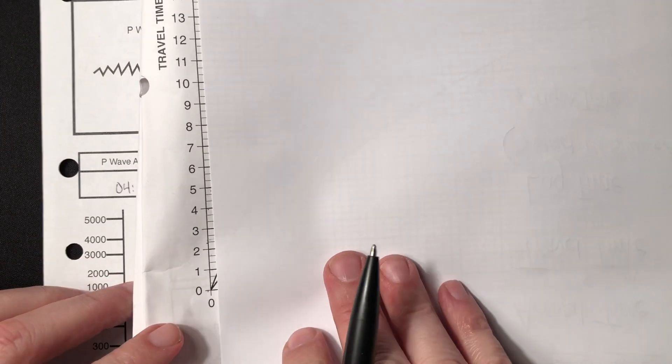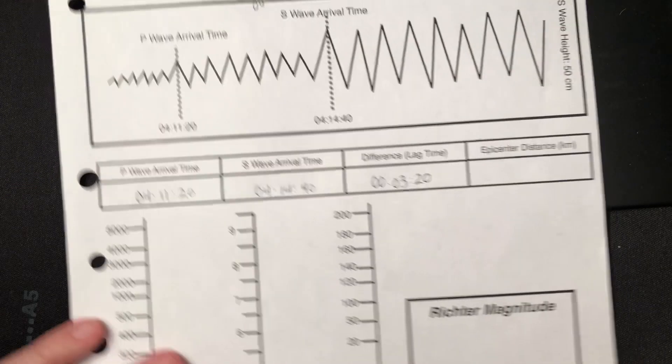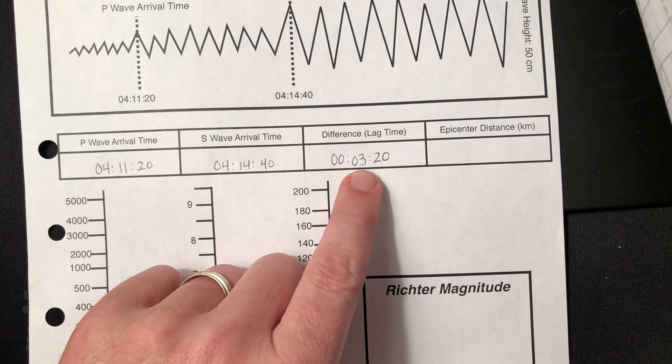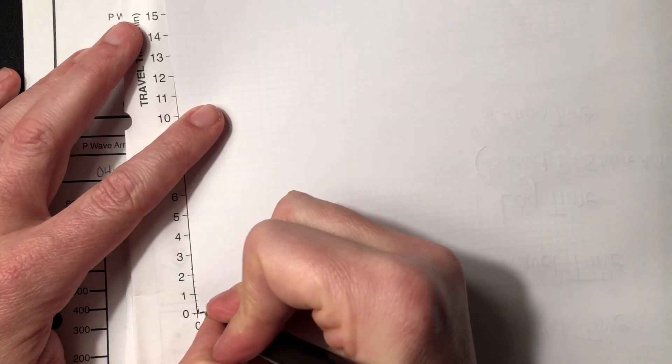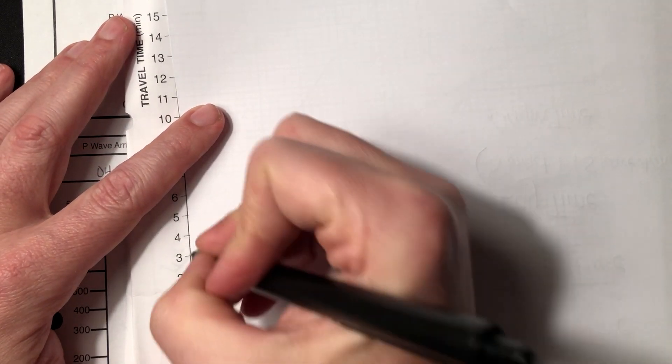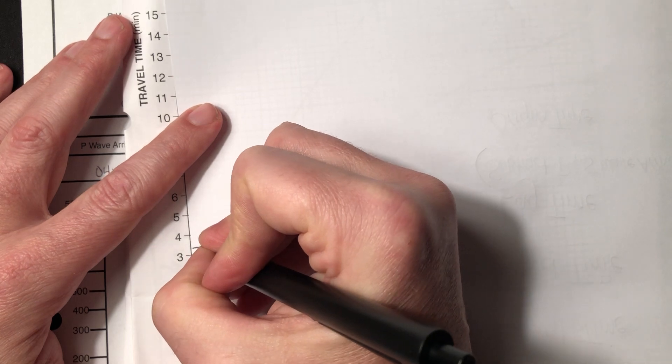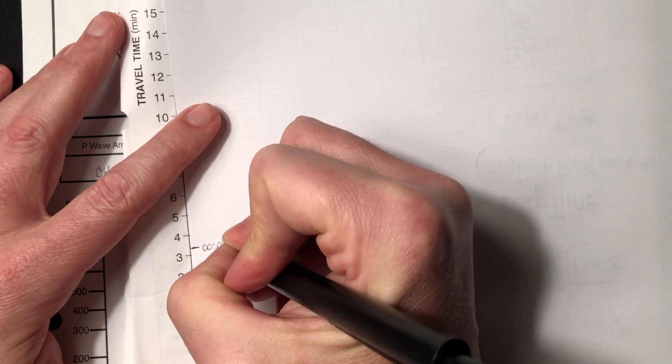So in order to get the epicenter distance, we have to mark off what I call the wedge method. We're going to take the 3 minutes and 20 seconds, and we're going to wedge it. Put that right there, mark off 0, always 0, and then 3 minutes and 20 seconds is right there. So 0, 3 minutes, 20 seconds.